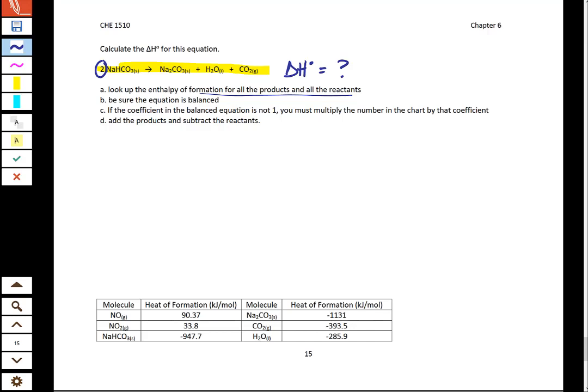Let's first write down our equation that we're going to use. We're going to do delta H equals the sum of delta H of the products minus the sum of delta H reactants.